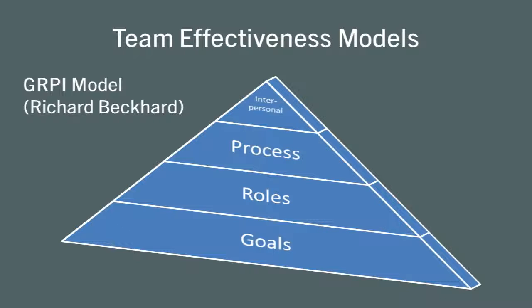The premise is that to be aligned as a team, you really need to focus on having common goals, or at least interdependent goals. From that, what roles do you need to establish? What team processes do you need to have? And how do you work through any potential interpersonal issues so that you have effective communication and the ability to work through conflict? It's shaped as a pyramid because most of what influences how well a team does focuses on alignment around a common or interdependent goal.